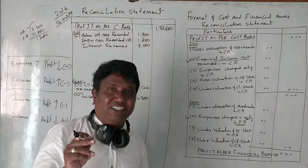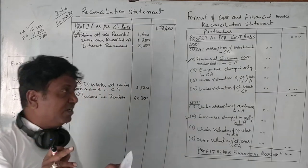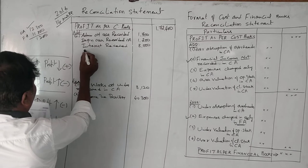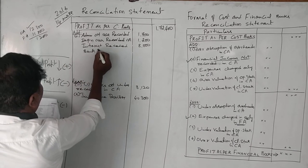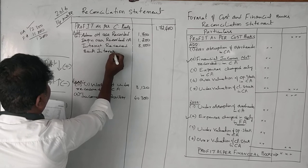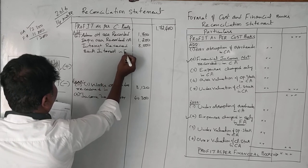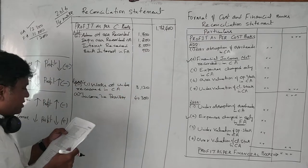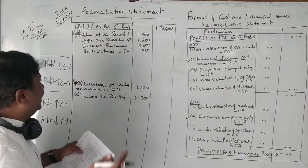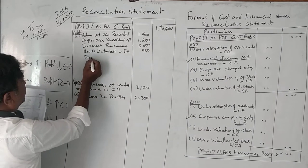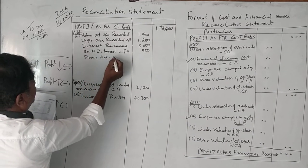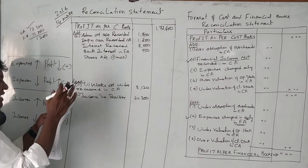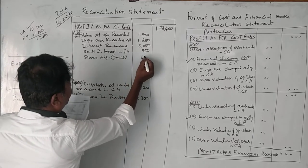Bank interest — 'credit' means income taken only in financial accounting but not in cost accounting. So bank interest in FA is 750 rupees, and that should be added. Stores adjustment credit — again 'credit' means income. All income should be added: 475 rupees.